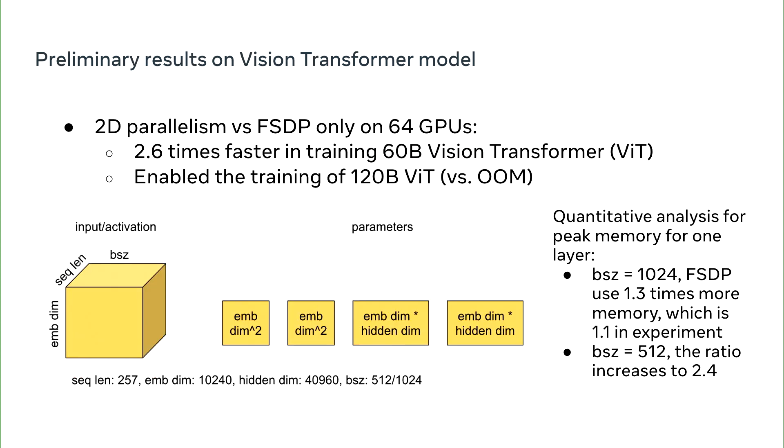Last but not least, I want to talk about what preliminary result we have got so far from the experiment on the VIT model. We see 2.6 times faster in training a 60 billion VIT model and enable the training of a 120 billion VIT model on 64 GPUs.